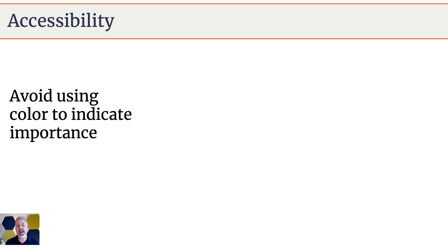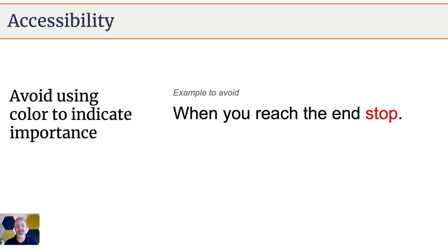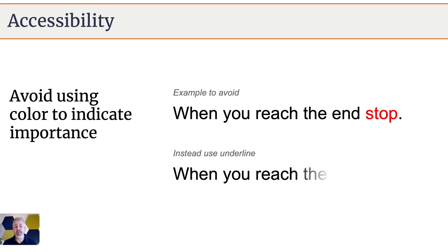We also want to think about how we use color to indicate importance. Here's an example to avoid: the sentence is 'When you reach the end, stop.' It might seem logical to use color here — especially red for 'stop' — and most people will see that. However, from an accessibility perspective, color is not a great way to indicate importance because for color-insensitive people it's not as clear.